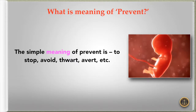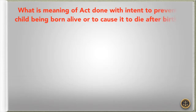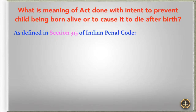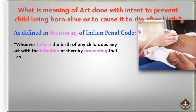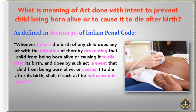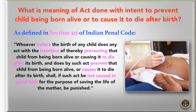Now the question is: what is the meaning of act done with intent to prevent child being born alive or to cause it to die after birth? As defined in Section 315 of the Indian Penal Code, whoever before the birth of any child does any act with the intention of thereby preventing that child from being born alive, or causing it to die after its birth, and thus by such act prevents that child from being born alive or causes it to die after its birth, shall, if such act be not caused in good faith for the purpose of saving the life of the mother, be punished.